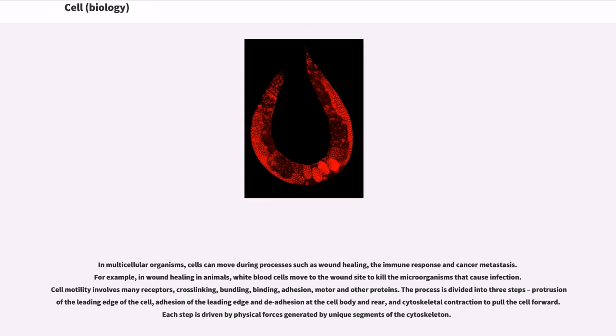For example, in wound healing in animals, white blood cells move to the wound site to kill the microorganisms that cause infection. Cell motility involves many receptors, cross-linking, bundling, binding, adhesion, motor and other proteins.